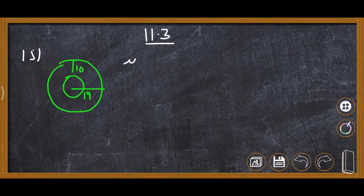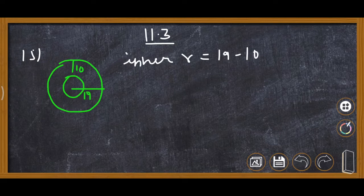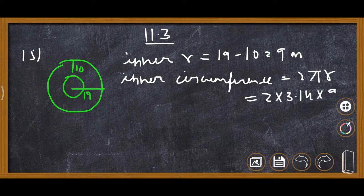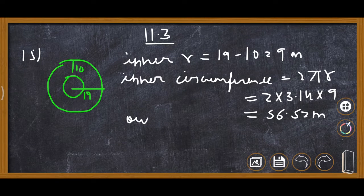First we find the inner radius: 19 minus 10 equals 9 meter. Now for the inner circumference, the formula is 2 pi r. So 2 multiplied by 3.14 multiplied by radius 9 gives us 56.52 meter.